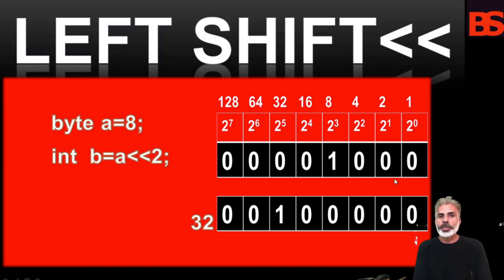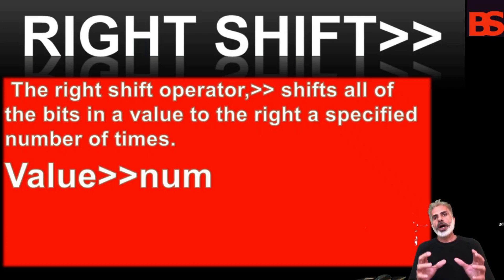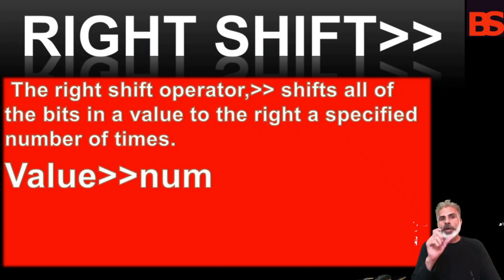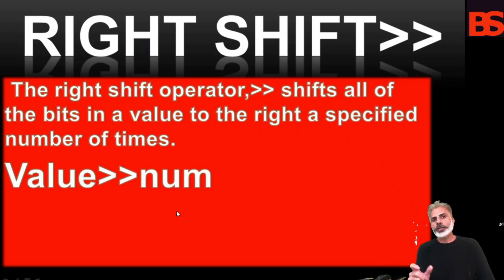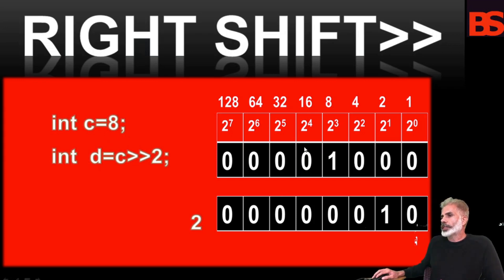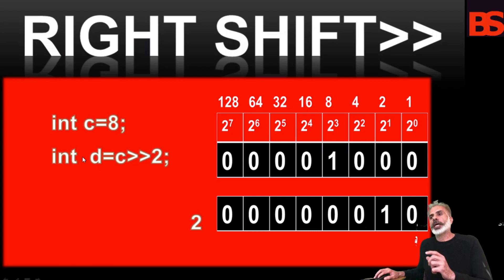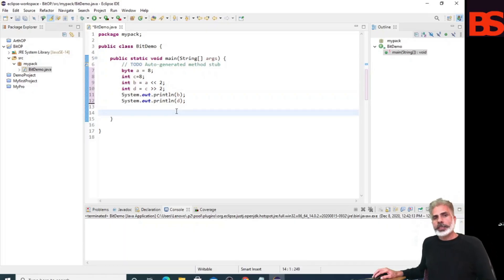The right shift operator shifts all of the bits in a value to the right a specified number of times. Its general form is: value >> num, where num specifies the number of positions to right-shift the value. For example, with C equal to 8, the bit pattern of 8 is shifted right two positions, so this bit moves right and the result is 2, which is assigned to D. Let's run this program and see the output.